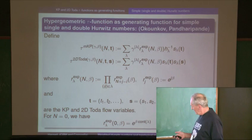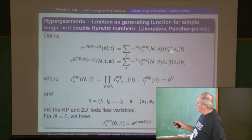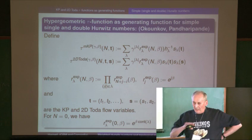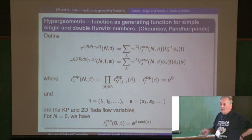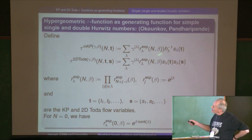Here's Okounkov and Pandharipande's generating function. You take Schur functions — every KP tau function can be developed in a basis of Schur functions. The coefficients have to satisfy the Plücker relations, they have to correspond to an element of some Grassmannian. It's better to look at the 2D Toda one, where you have a double Schur function expansion for those who are familiar.